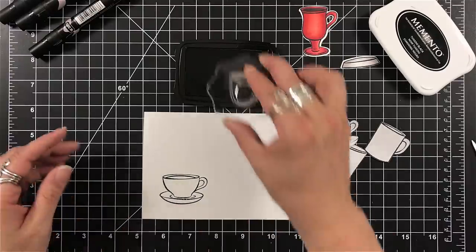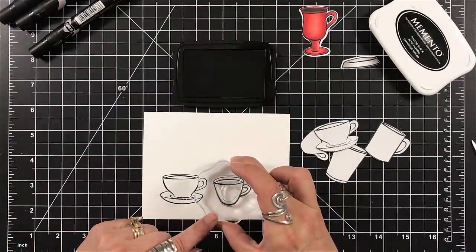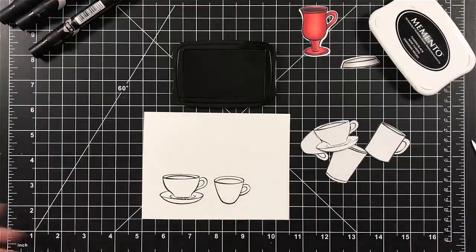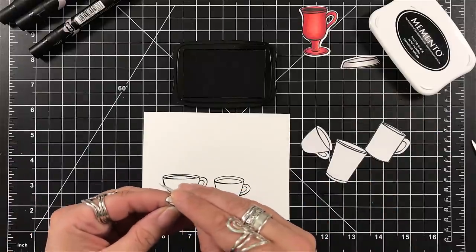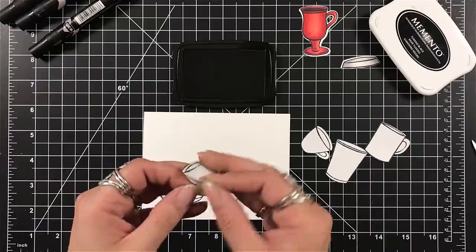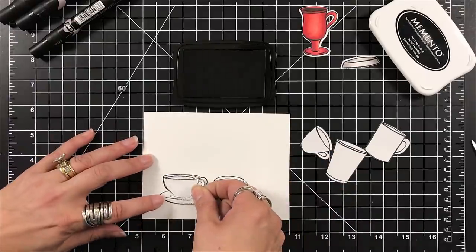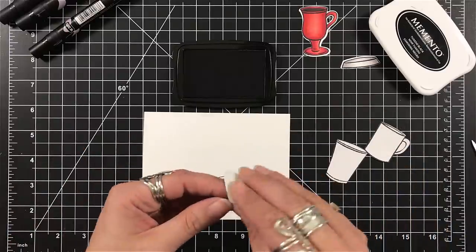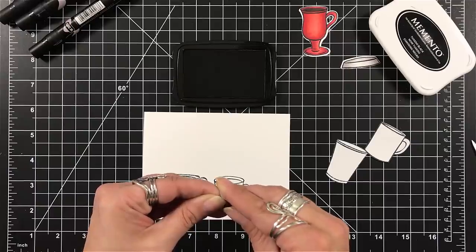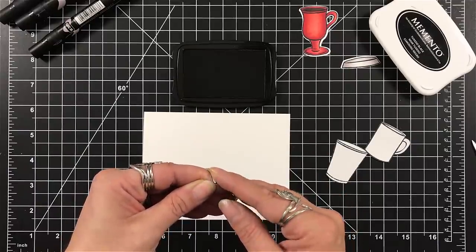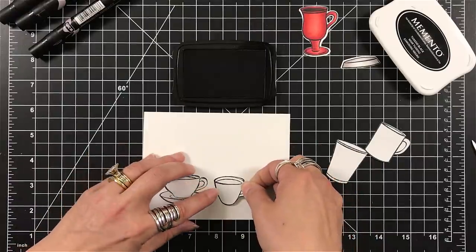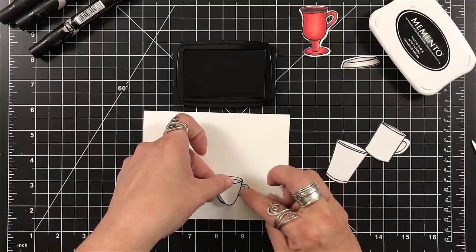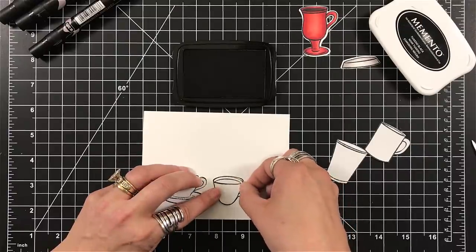I'm going to stamp my first two images because those are the two images that I want to come to the forefront. So when you do that you want to stamp those images first and then you're gonna put your masks down and then you're gonna stamp where you want your other images to be. Now the masking paper that I'm using is by Simon Says. So far I like it. I think it's got a very good bond.